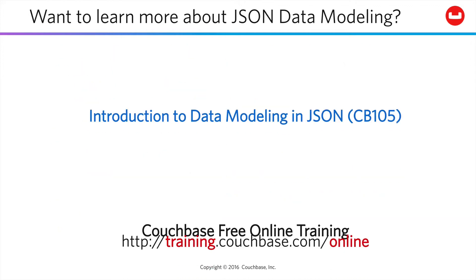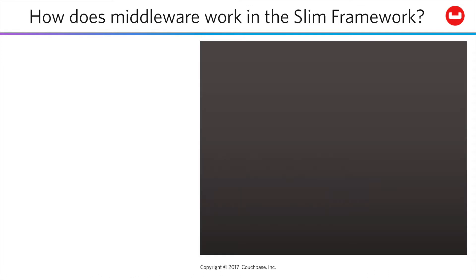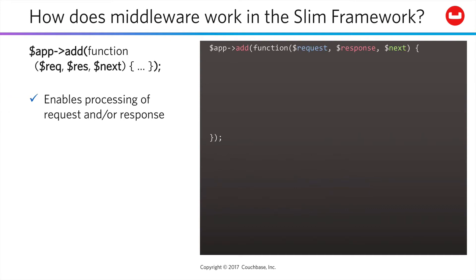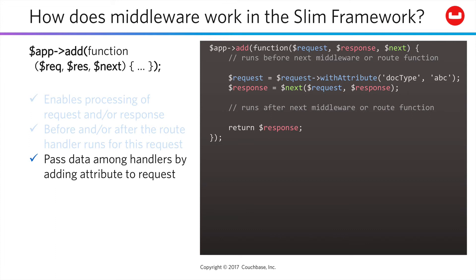To learn more about JSON data modeling, take our introductory course here online. One last note for the lab ahead: we're going to be working with middleware in the SLIM framework. You're able to add functions that will pre-process and/or post-process each request before and/or after the route handler runs. When using this technique, you can also pass data among the various handlers by adding attributes to the requests — for example, adding a doc type that's received on the path for a given route, so that the code to extract that value can be kept in one place.